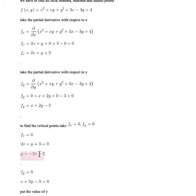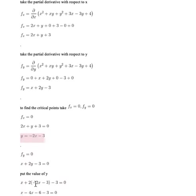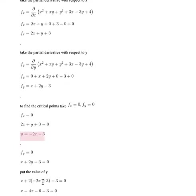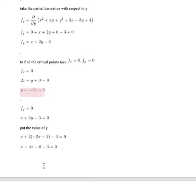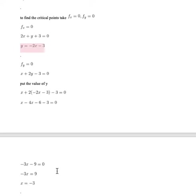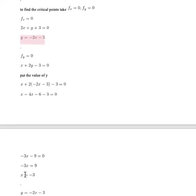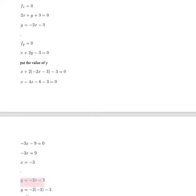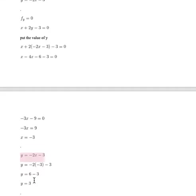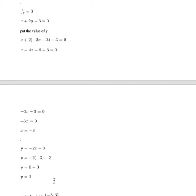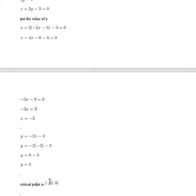Substituting y = -2x - 3 into x + 2y - 3 = 0 and simplifying, we get x = -3. Putting x = -3 back into the expression for y and simplifying, we find y = 3. So the critical point is (-3, 3).